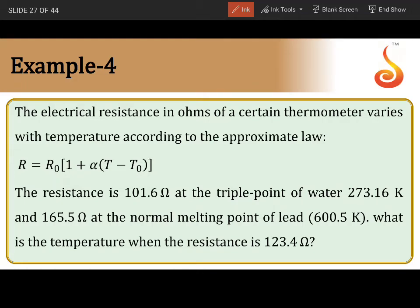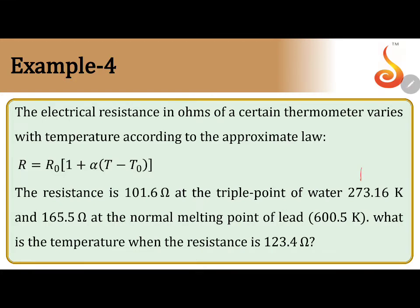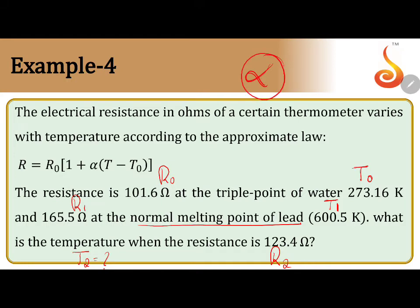In this numerical, there is a resistance which depends on temperature, and the approximate law given is R = R₀(1 + α(t - t₀)). The resistance is 101.6 at the triple point of water temperature, so T₀ corresponds to R₀. When the temperature is the normal melting point of lead, the resistance is 165.5. We also need to find the temperature when resistance is 123.4. We do not know alpha or T₂.